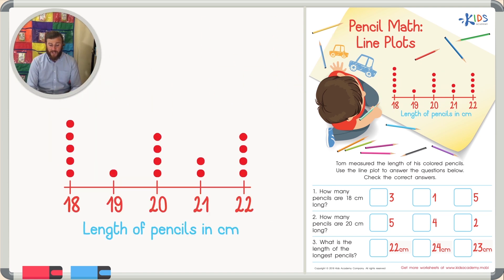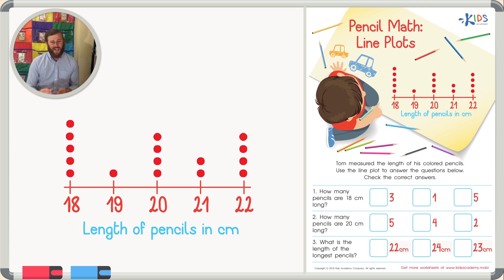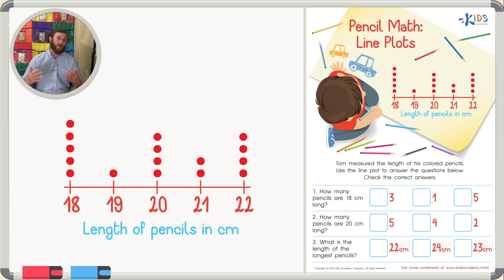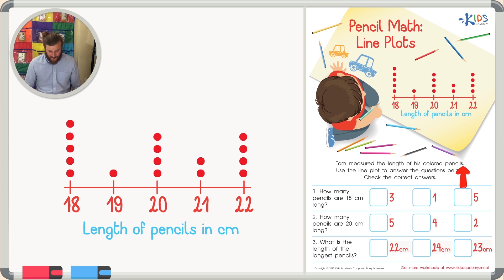Today's line plot is about the length of pencils in centimeters. The different lengths are 18, 19, 20, 21, and 22 centimeters. Each length from 18 through 22 has at least one pencil at that height. I'm going to use this basic information to start understanding the line plot before answering the questions.